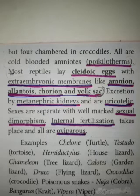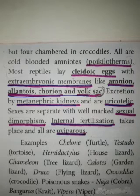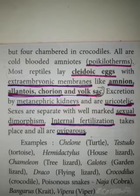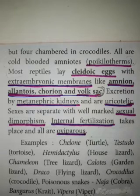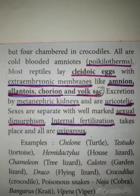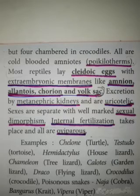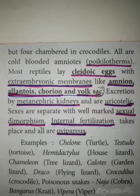All reptiles are cold-blooded, meaning poikilothermic — they change their body temperature according to their surroundings. They are amniotes. Most reptiles lay cleidoic eggs with shells. The eggs have extra-embryonic membranes like the amnion, allantois, chorion and yolk sac.